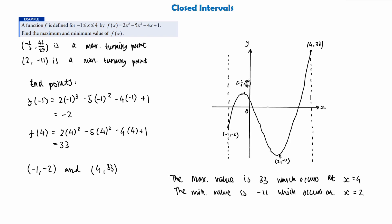Remember, the maximum and minimum don't have to be at the stationary points. In this case the minimum value was at the stationary point, but the maximum value was at the end point, because the end point (4, 33) was greater than the local maximum turning point.